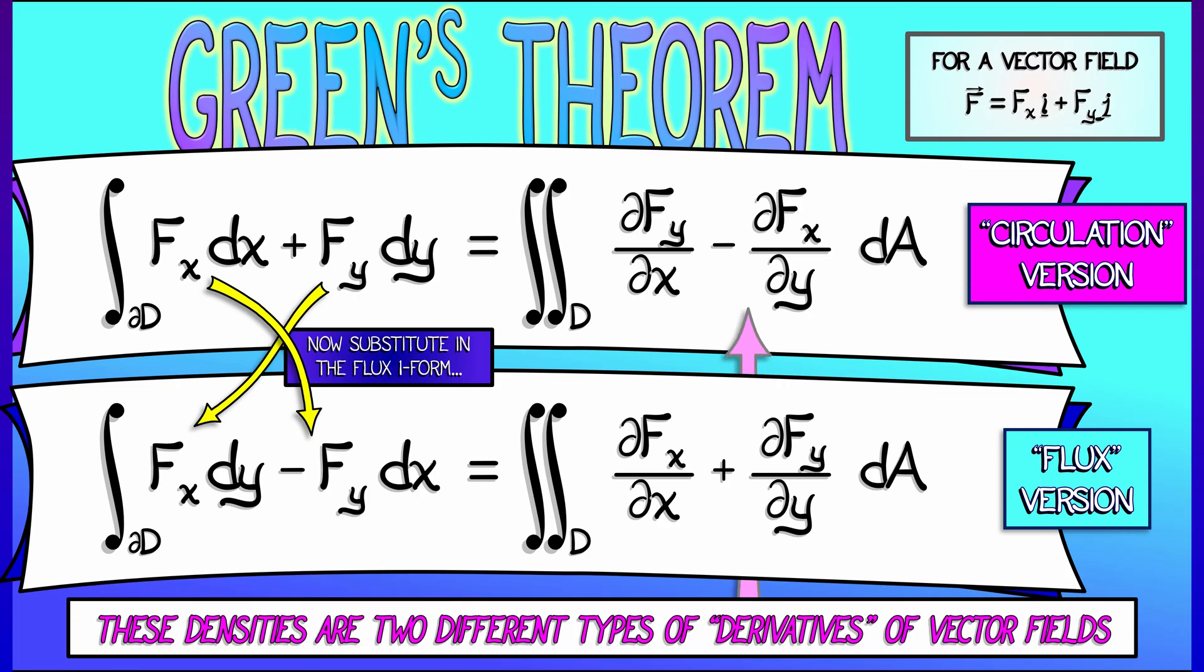Now, take a look at these two right-hand sides. These look different. They're both really important. They are two different types of derivatives of planar vector fields. And that's what we're going to be concerned with in this chapter. Now, what do you observe about these two different densities?